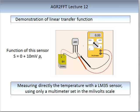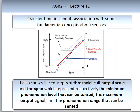Here we demonstrate a linear transfer function measuring temperature directly with an LM35 sensor. Using a multimeter set in millivolts, we can determine the temperature. The function of this sensor is S = 0 + 10 millivolts × P. You can see the transfer function and its associations illustrated in the graph. I'd like you to spend a few moments thinking about this.